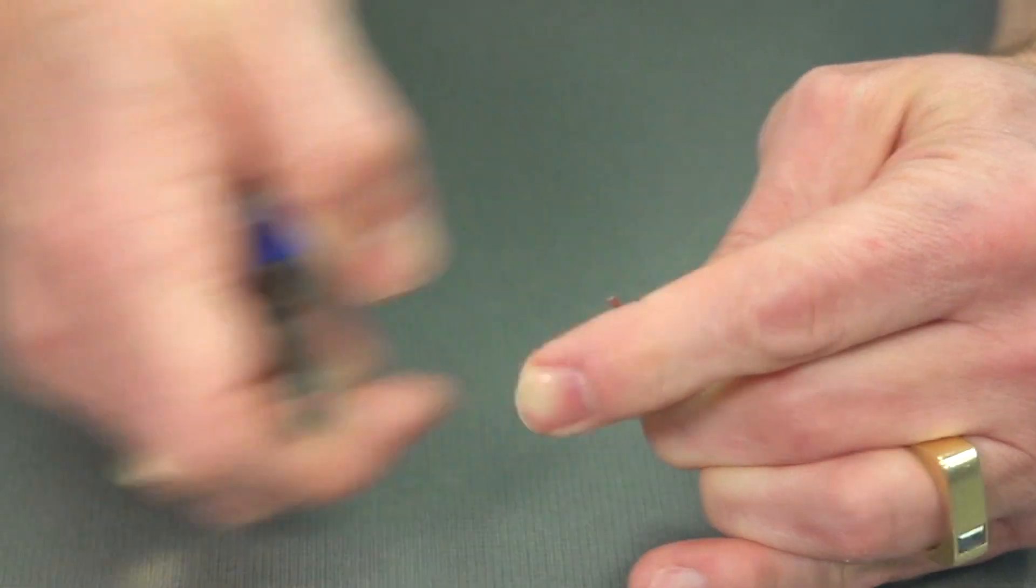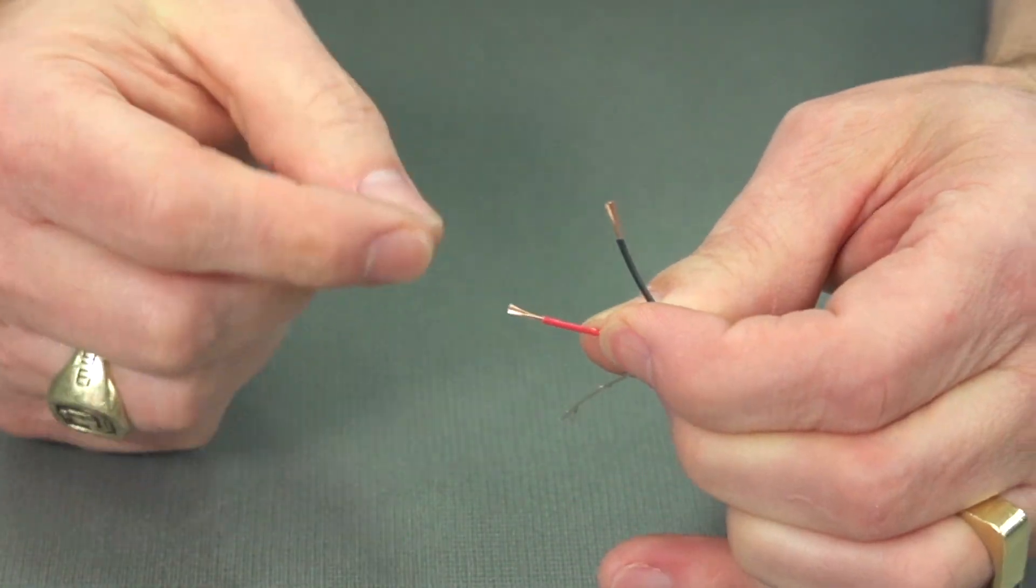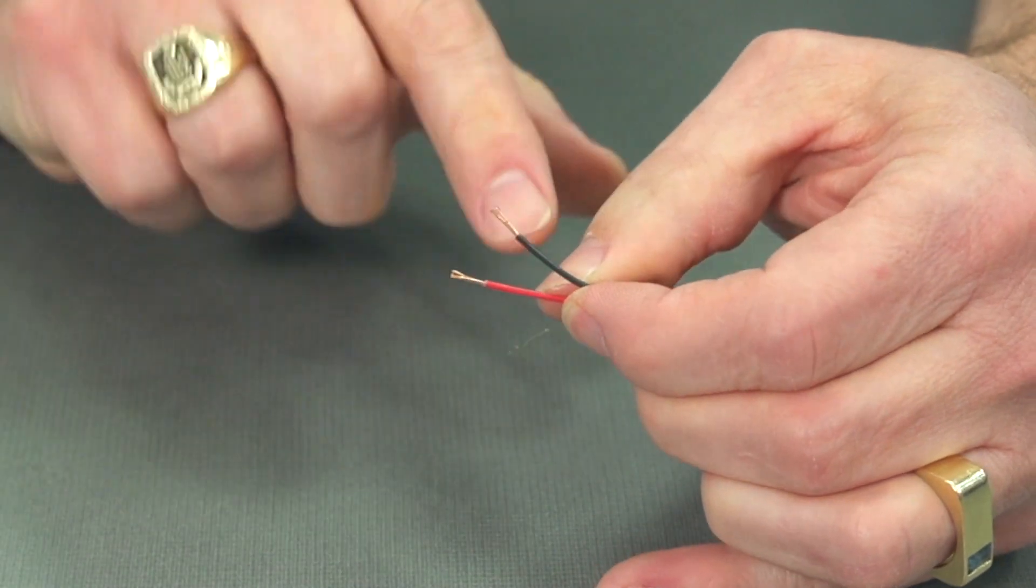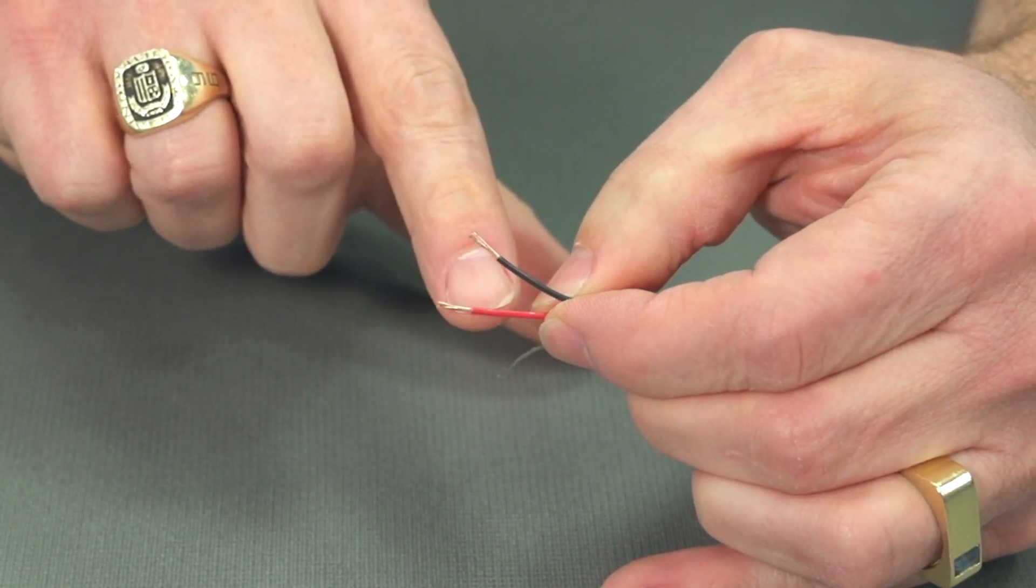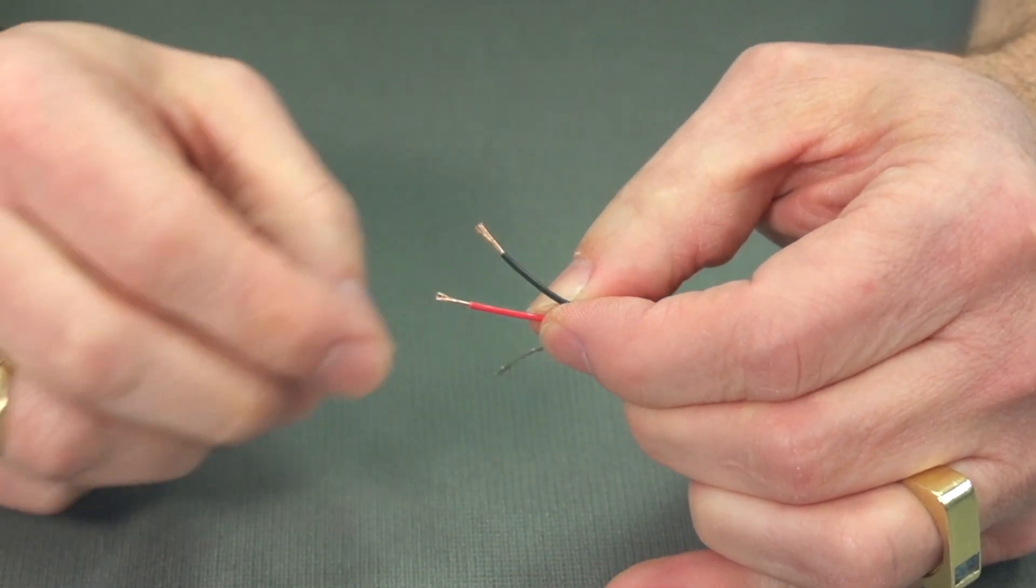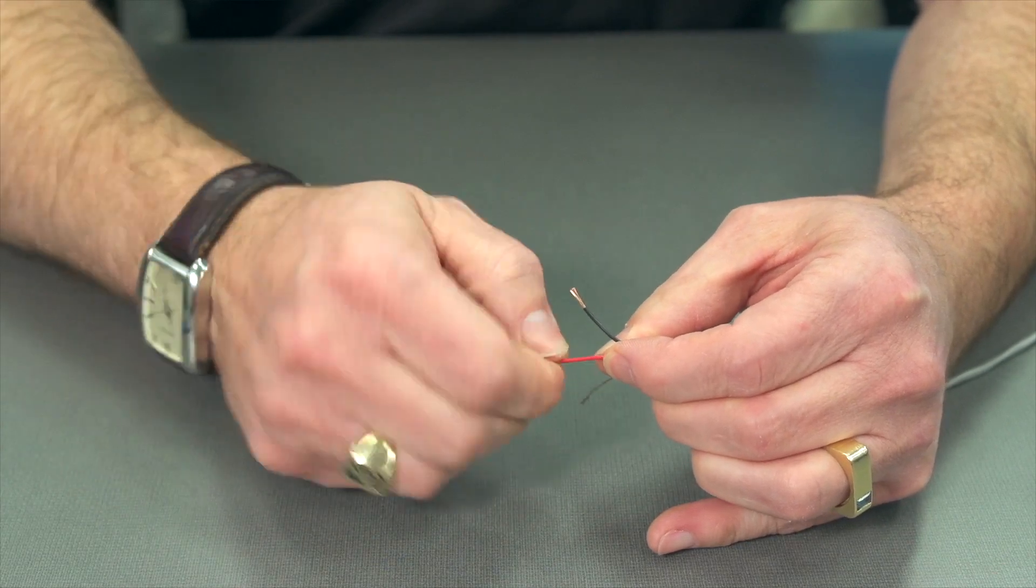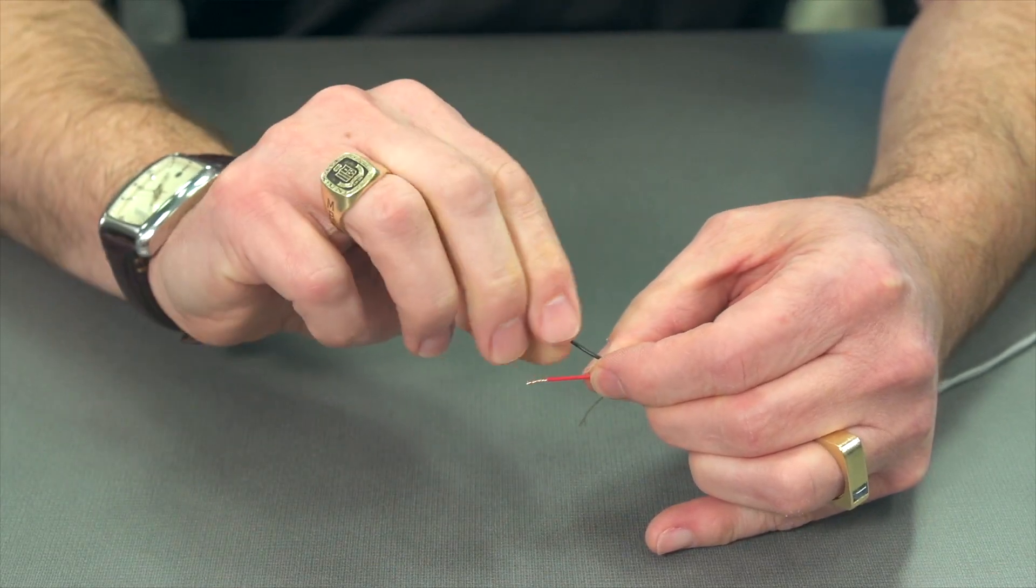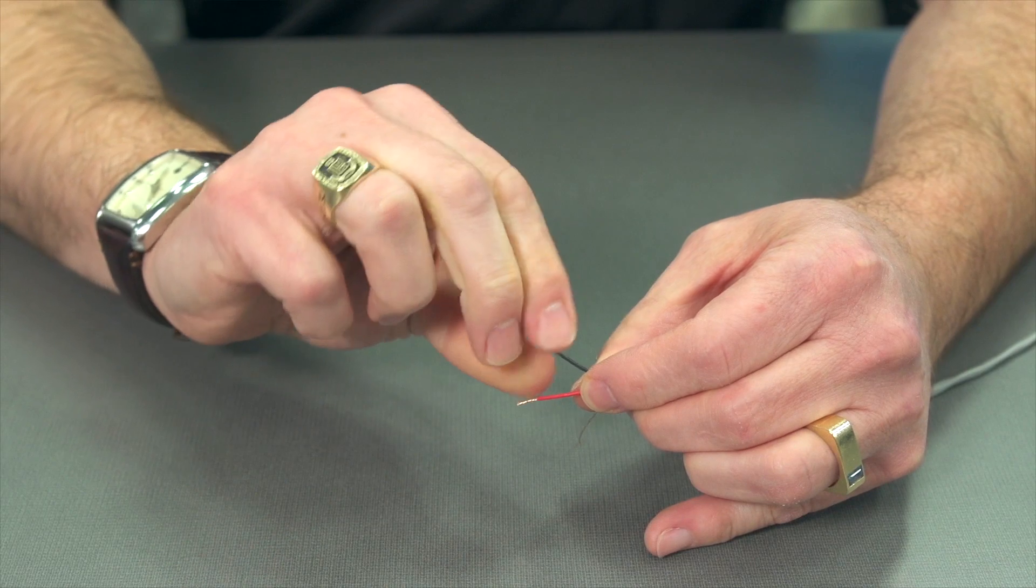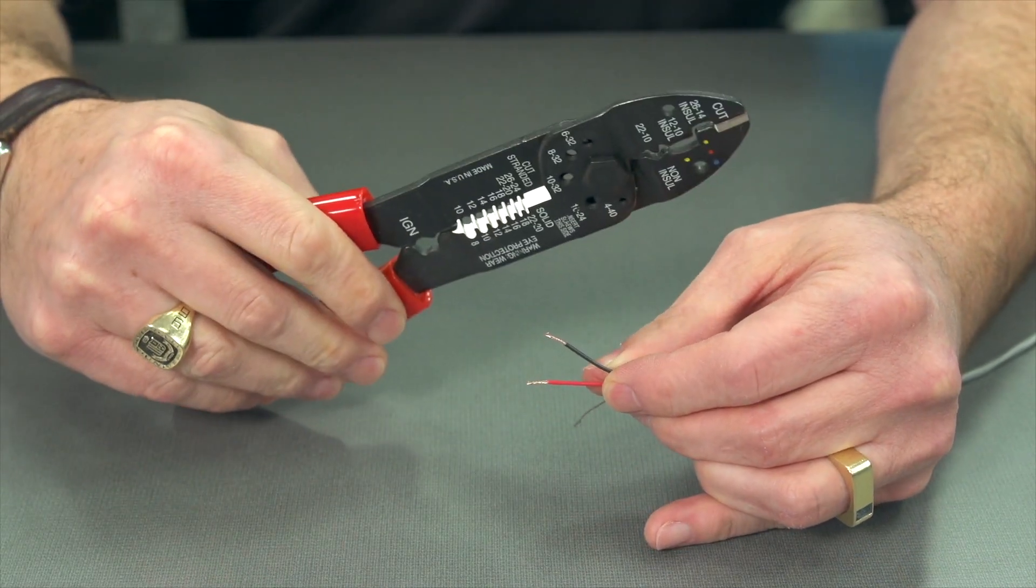One reason is that when I go to heat shrink this and I add heat if there's a split it will actually open up and split all the way down the cable. So we want a nice sharp edge. And the proper tool to use is the stripping tool which we used earlier.